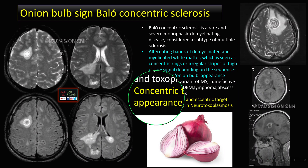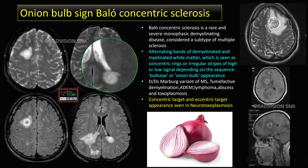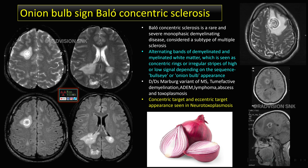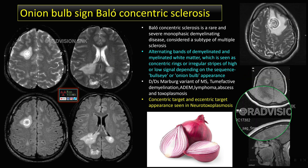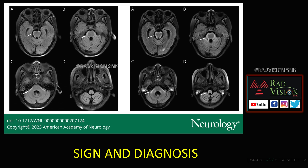Next case — guess the sign and diagnosis. Here you can see multiple alternating hyperintense and hypointense areas in a laminated appearance. These alternating bands represent demyelinated and myelinated white matter, which resembles concentric rings — the onion bulb appearance. This is classically seen in Balo's concentric sclerosis. Other differentials include Marburg variant of MS, tumefactive demyelination, ADEM, lymphoma, abscess, and toxoplasmosis. A similar concentric or eccentric target appearance can be seen in neurotoxoplasmosis. Whenever you see alternating bands of demyelinating and myelinated white matter with perillesional edema in the periventricular location, definitely suspect Balo's concentric sclerosis — this is called the onion bulb sign.